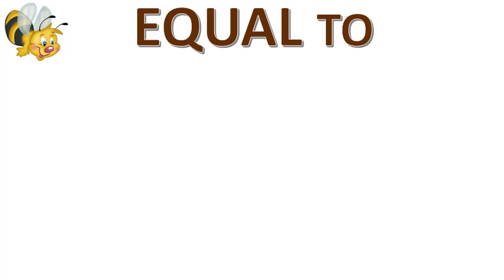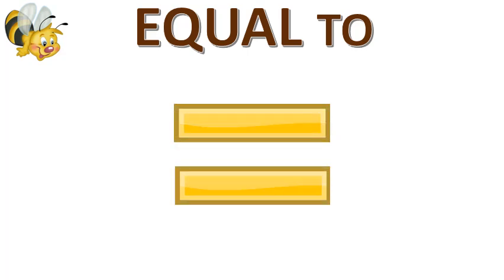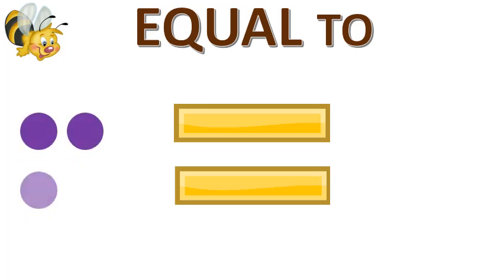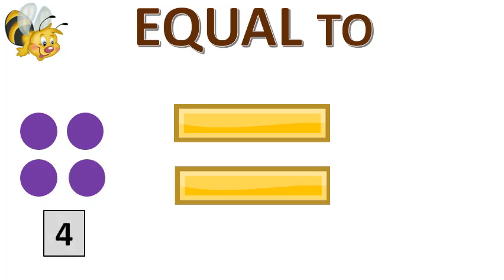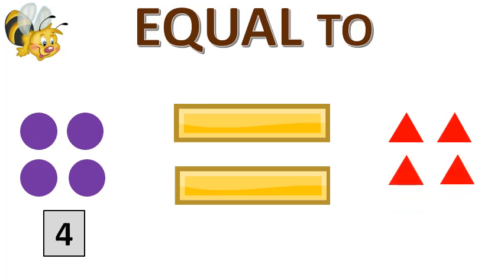Now let's understand the concept of equal to. Here I'll be showing a set of pictures. 1, 2, 3, 4. So here we have 4 purple circles. Now let's check out the next one: 1, 2, 3 and 4. So we have 4 red triangles. The number of circles is equal to the number of triangles. So 4 is equal to 4.